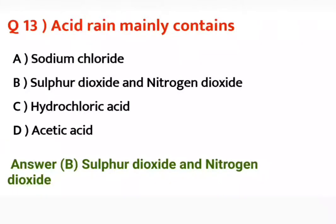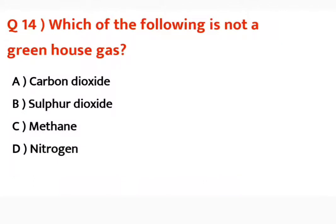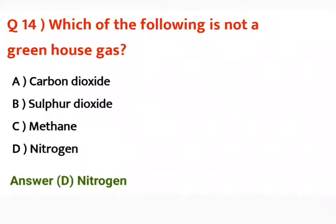Question number fourteen: Which of the following is not a greenhouse gas? Carbon dioxide is a greenhouse gas, sulfur dioxide is a greenhouse gas, methane is a greenhouse gas. Nitrogen is the correct answer — it is not a greenhouse gas.